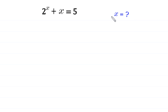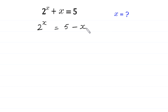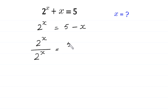Let's start by moving the plus x to the right side. 2 to the power x is equal to 5 minus x. Now we divide both sides of this equation by 2 to the power x. 2 to the power x divided by 2 to the power x is equal to 5 minus x divided by 2 to the power x.